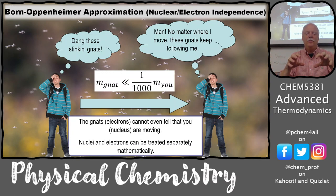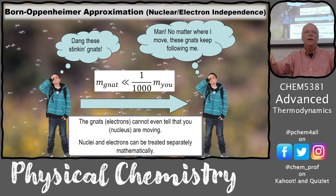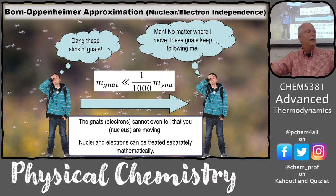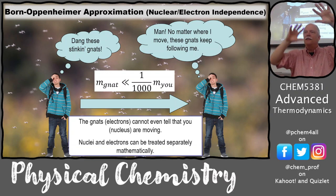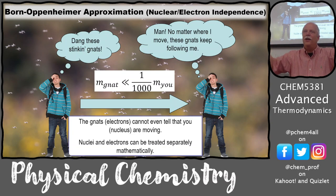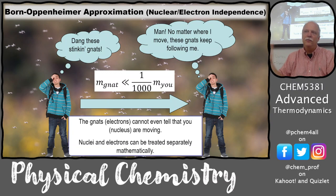The computer can then move those nuclei, calculate the electron cloud again, and see if the energy went down. If it went down, we're at a more optimized geometry, then it moves again. Every one of those moves of the nuclei allows the electrons to find a different position, and we calculate how all the Coulombic charges are minimized to find lower energy.